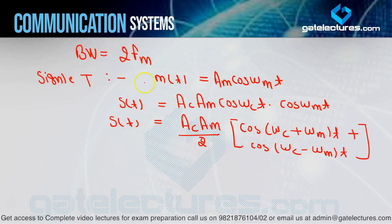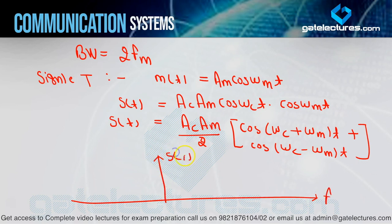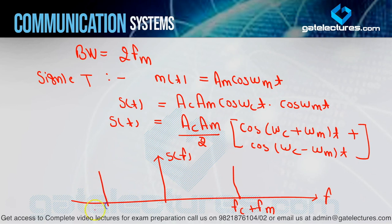The spectrum S(F) for single-tone DSB-SC: both terms are cosines with constant amplitudes, so they produce impulses — one at positive frequency and one at negative frequency — with amplitude divided by 2. First term frequency is FC+FM, with amplitude AC·Am/4 at +FC+FM and at −FC−FM. Second term frequency is FC−FM, with amplitude AC·Am/4 at FC−FM and at −FC+FM.